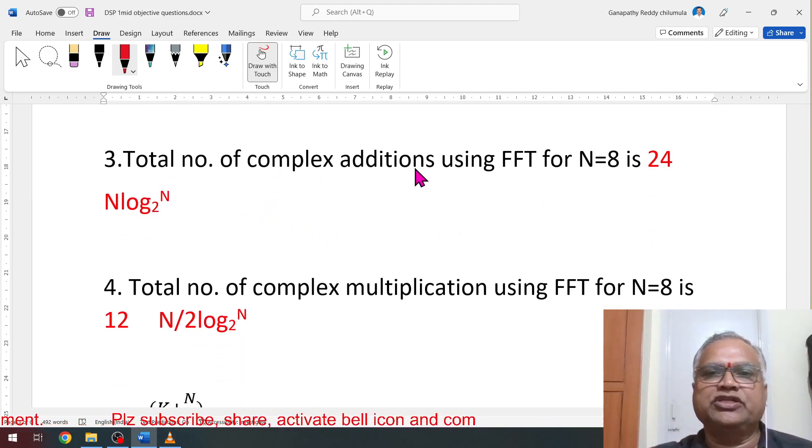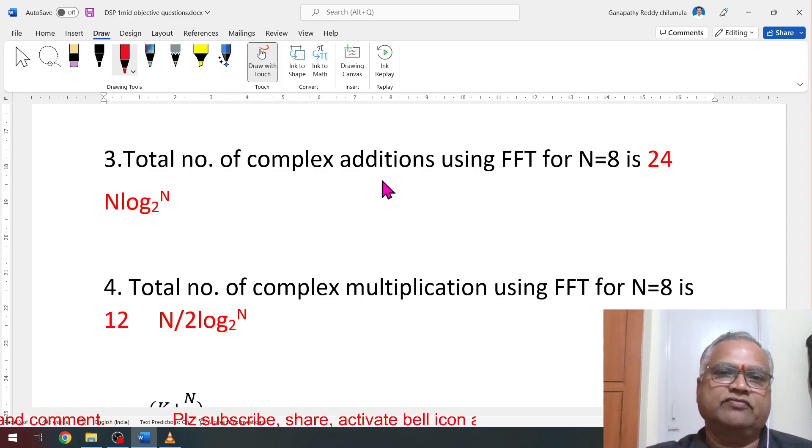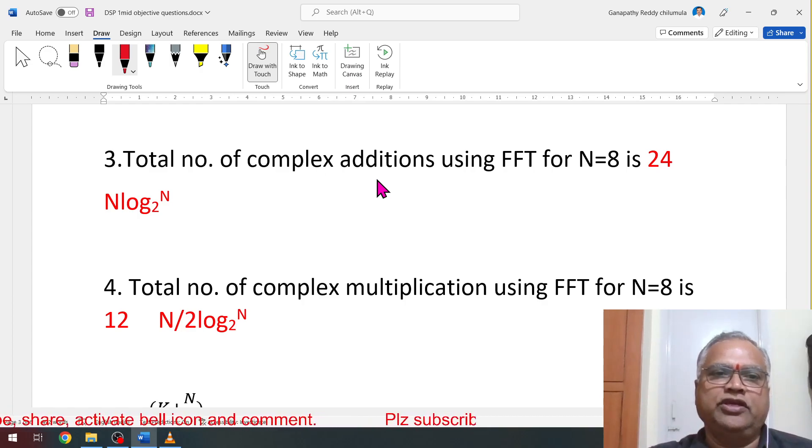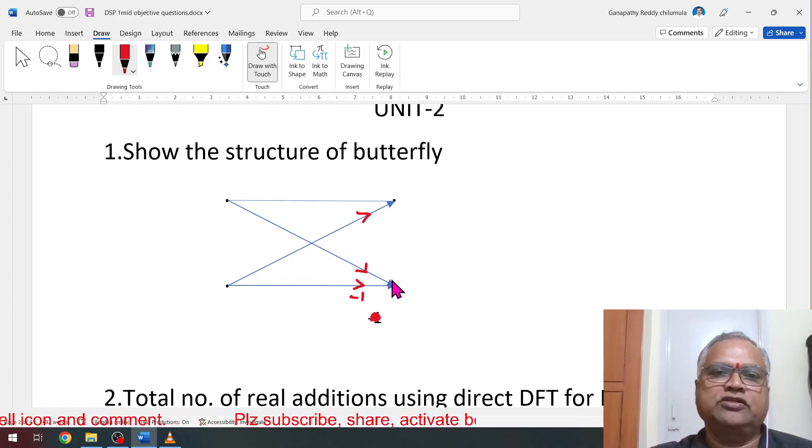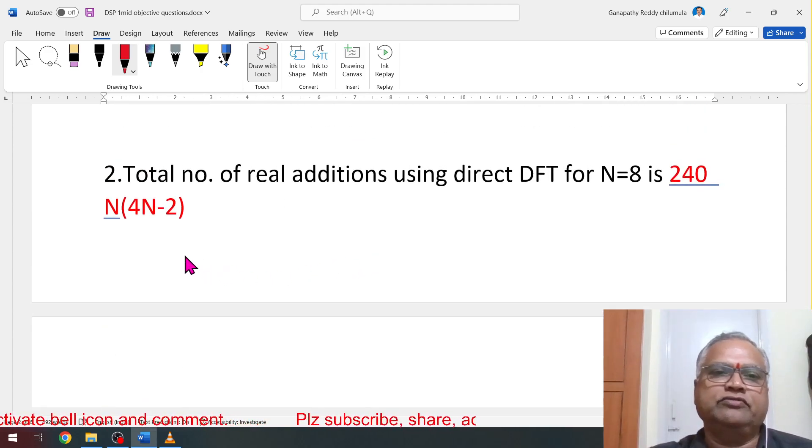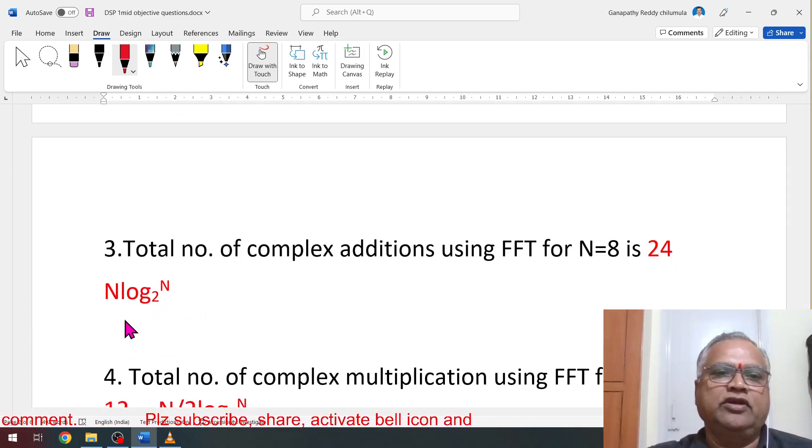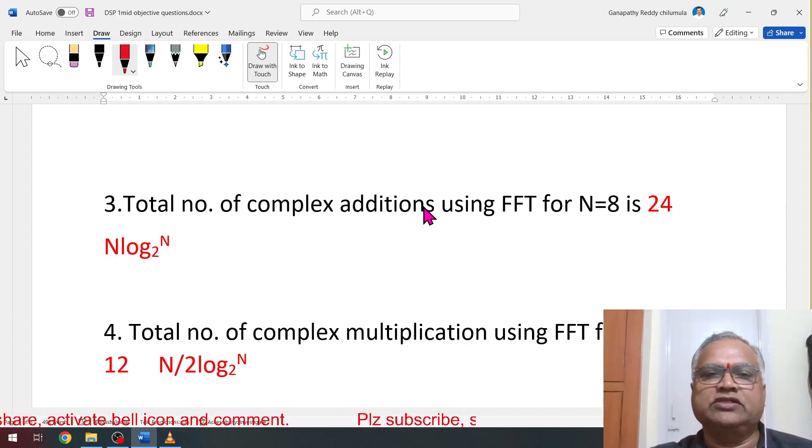Then total number of complex additions using FFT here. These formulas already given in the class. Total number of complex additions. How many complex additions for each? For example, this is one complex addition, this is one complex addition, each butterfly 2 are there. For 8-point, there are such type of 2-point will be 4 are there. 4 into 2 is 8. That is why here n, and number of stages are log n base 2. Number of stages are total number of complex additions. Each stage, number of complex additions are n, number of stages are log n base 2. Use this formula, you will get 24.